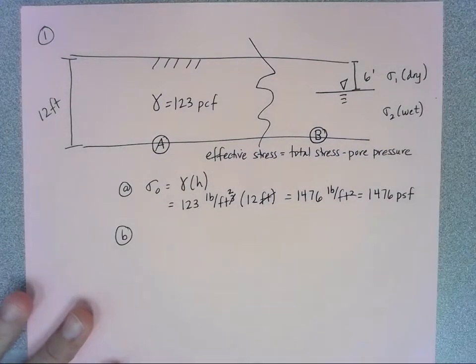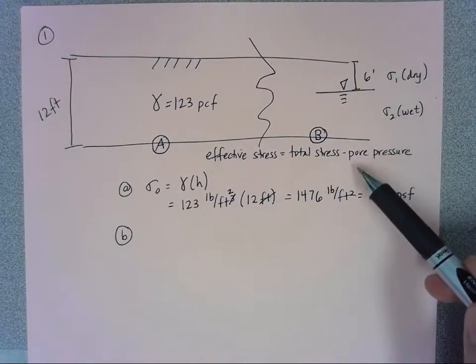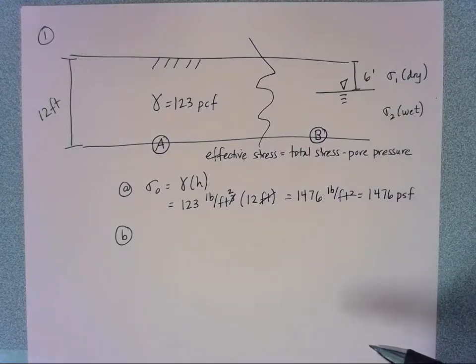But then we're also going to have to have a sigma two part up here which is underneath the water table, that's my wet part, and I have to make sure that I'm subtracting out the pore pressure from that wet section.